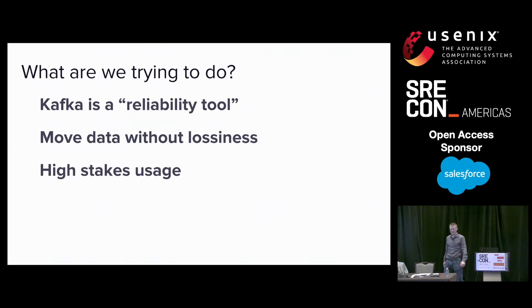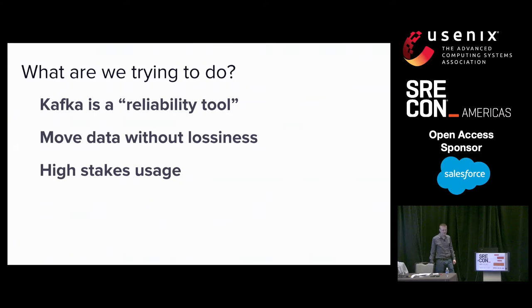So first things first, why do we care about Kafka being reliable? For companies that deal with moving a lot of data around, such as Lyft, Kafka is a reliability tool for us. What I mean by that is, when we move data around, we want to minimize data loss. When I was a young engineer, I naively thought, why do we need a system to handle our messages? Why can't we just send messages point to point?